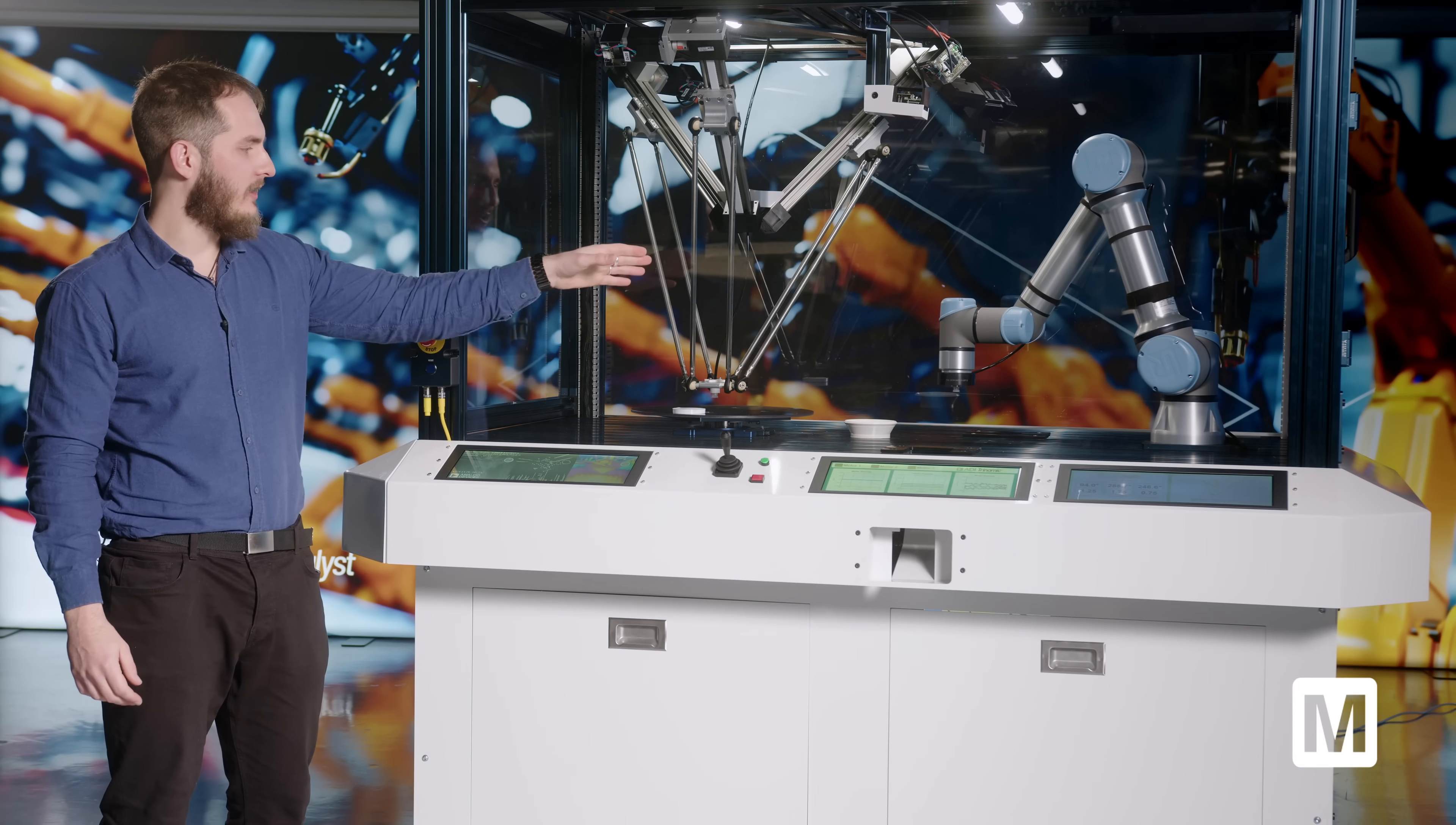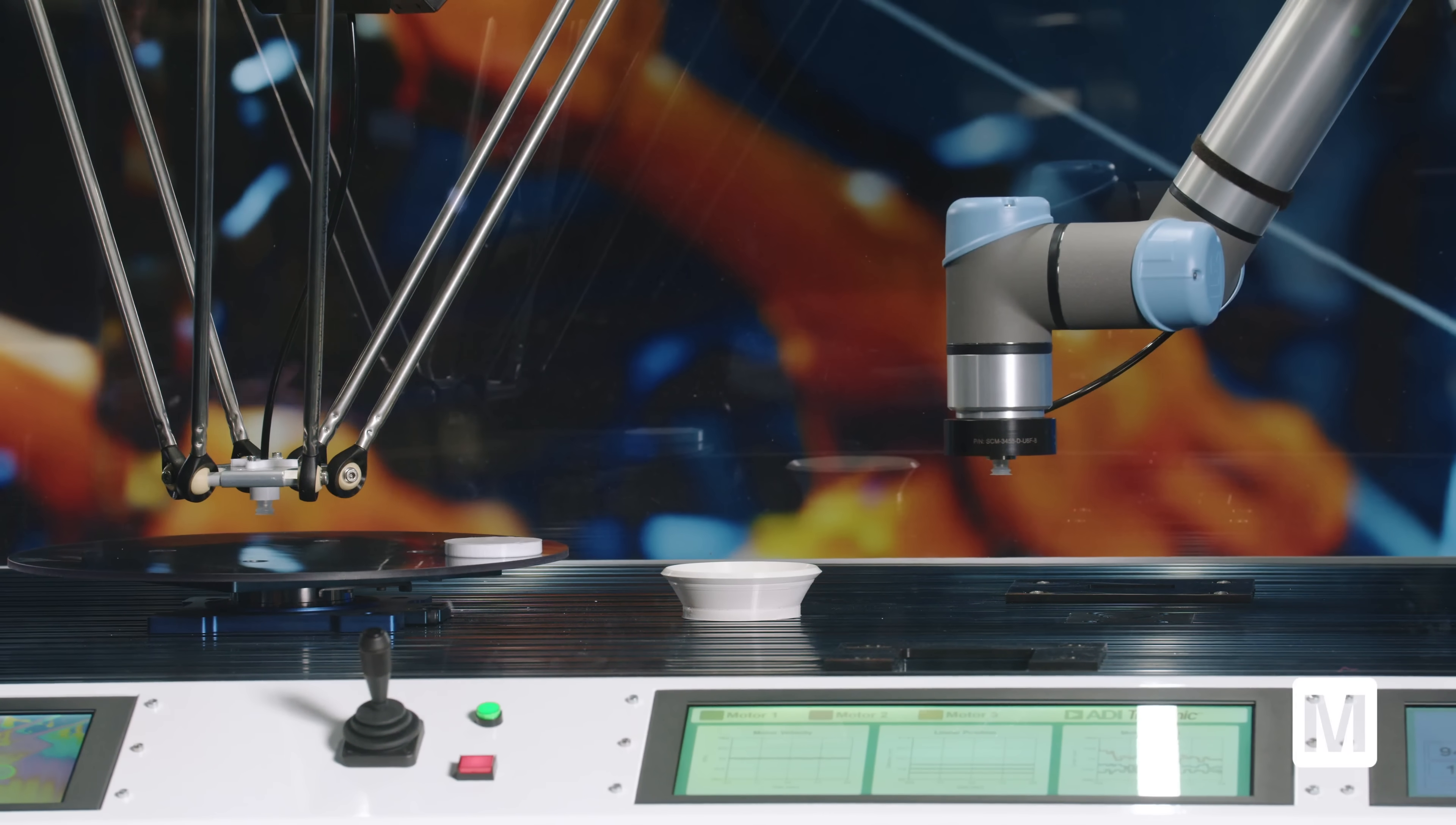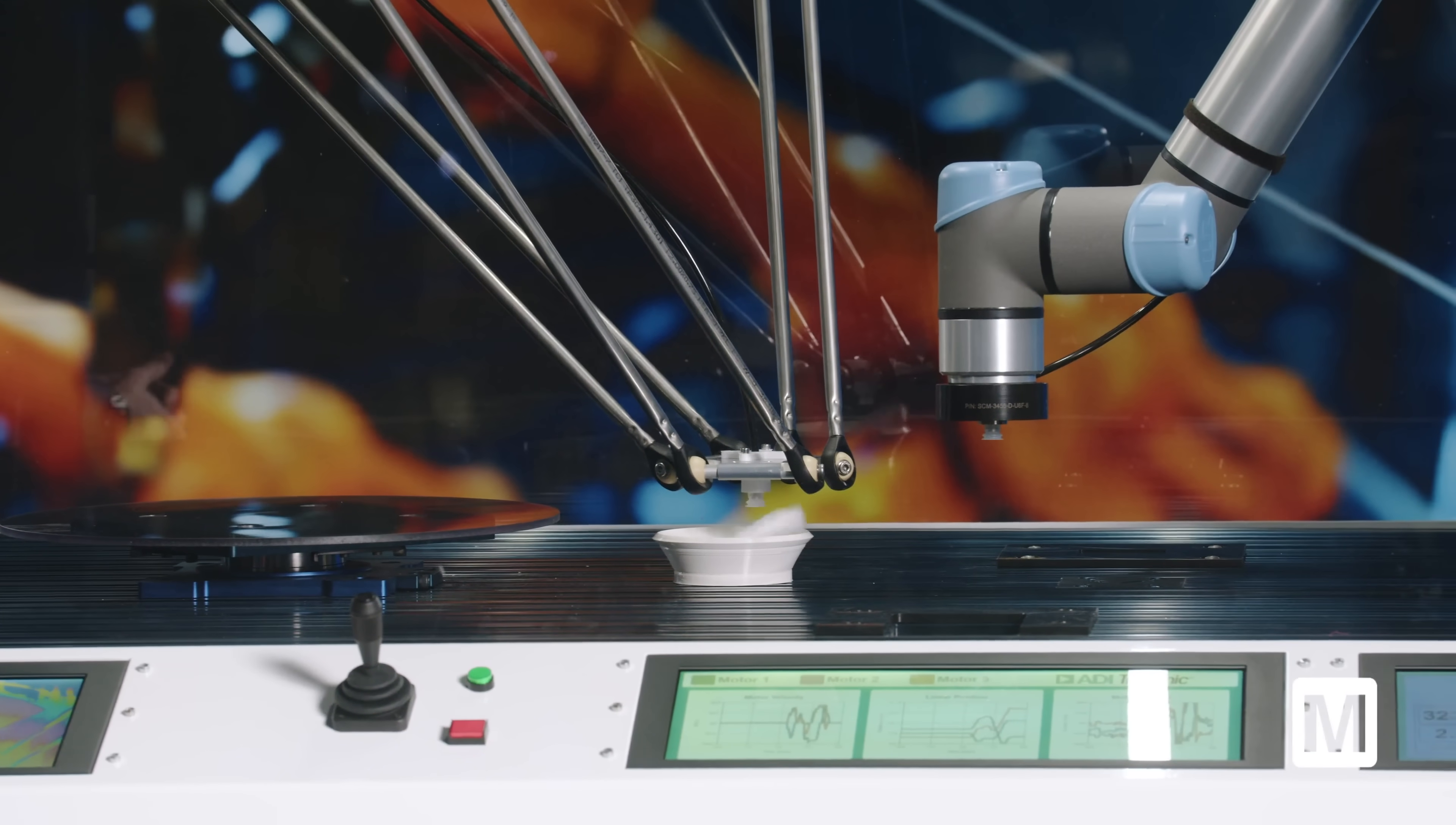In this operation, the cobot is picking the object, placing it onto the rotating plate. That's rotating to an unknown position to the Delta robot. The time-of-flight is detecting the position of this object and passing this to the Delta robot, which in turn is going there, picking it up, and returning it to the original position.